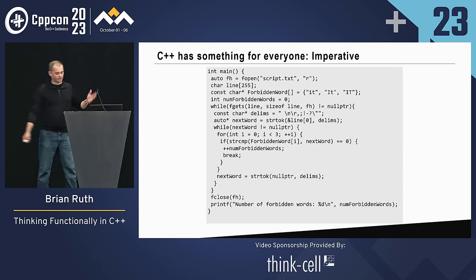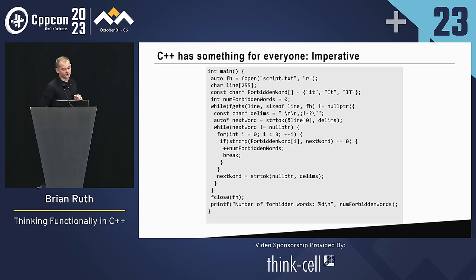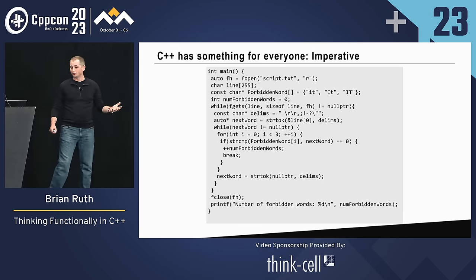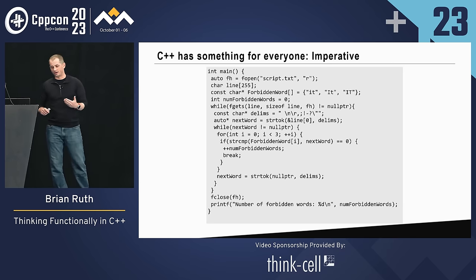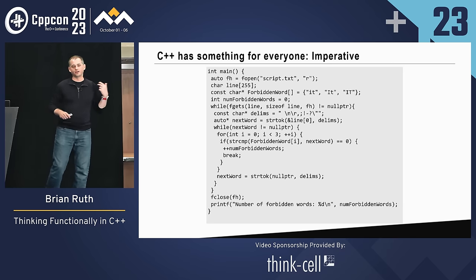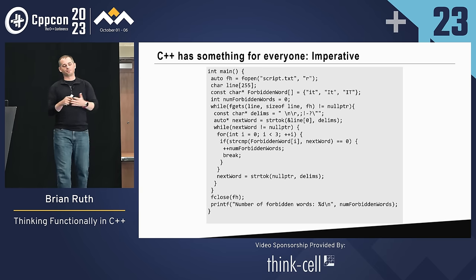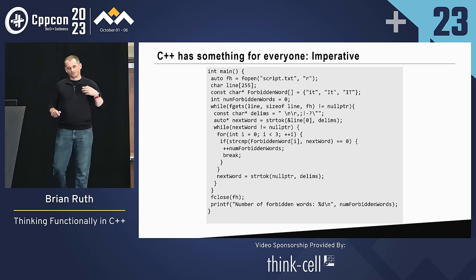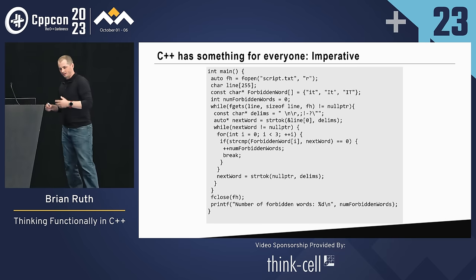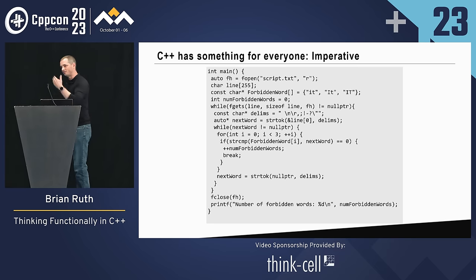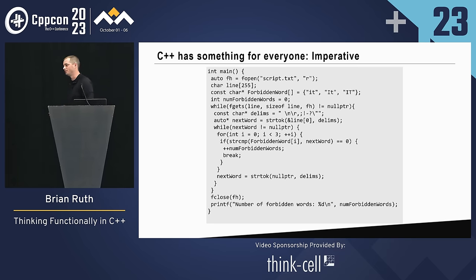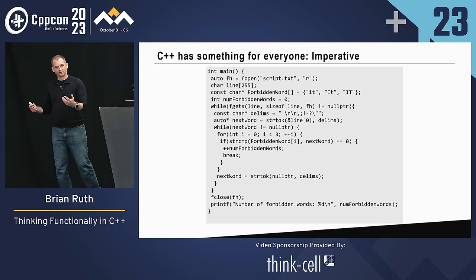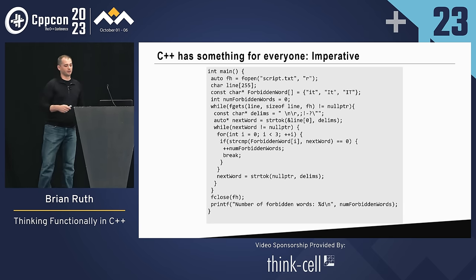Here's an example of some imperative code. We've got manual handle management with fopen, we allocate all of our memory, we loop through a file reading things manually, we compare everything to every possible capitalization of the forbidden words, close things out, count it. We're telling the computer step by step exactly what we want it to do — do this, then this, then this. It isn't really the purpose of the code, but we're dictating to the computer what we want to do.